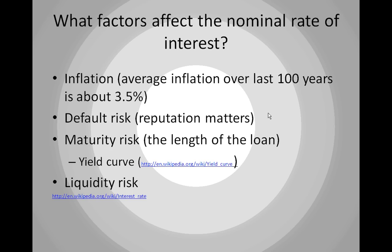Comparing person A to person B — if person A has gone bankrupt before and person B has a stellar credit history, the default risk is higher for person A, so they'll be charged a higher rate of interest. The third factor is maturity risk, which relates to the length of the loan. For longer loans, a premium must be paid because the lender is without their money for a longer period. The yield curve is a graph that demonstrates maturity risk — interest rates are lower for shorter maturities and higher for longer ones.